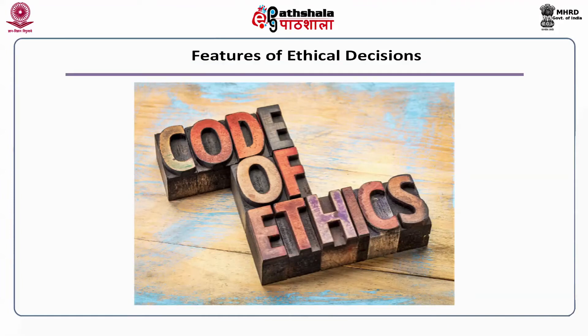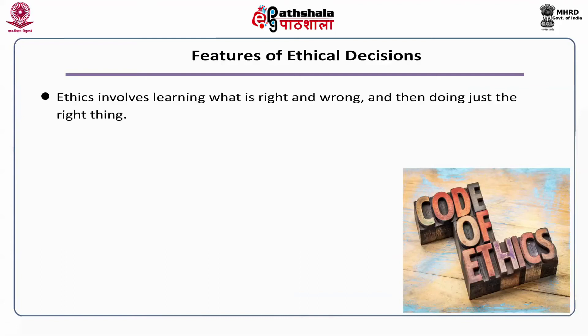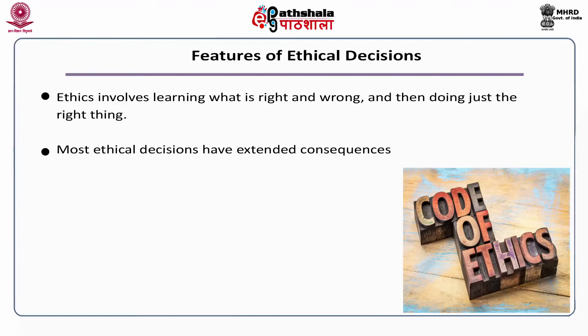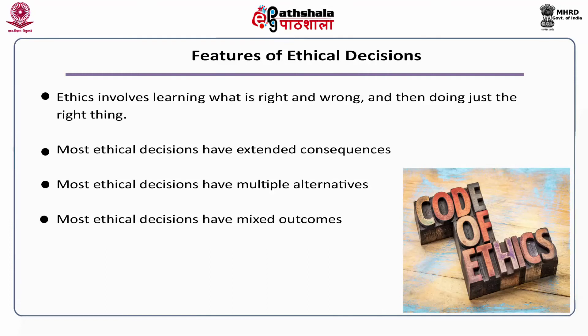Ethics have various characteristics. Some of the main characteristics can be explained as follows: Ethics involves learning what is right and wrong and then doing just the right things. Most ethical decisions have extended consequences. Most ethical decisions have multiple alternatives. Most ethical decisions have mixed outcomes. And moreover, ethical decisions have uncertain consequences.